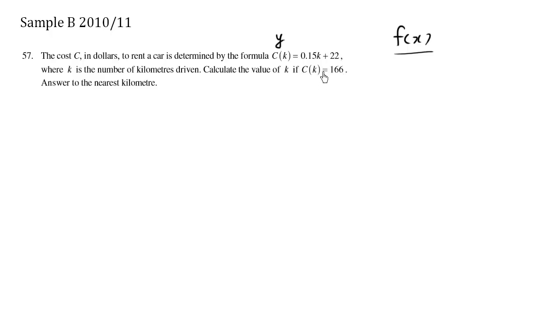c as a function of k is 166. So we're going to rewrite this. We're just given the c value. We're going to plug it in here. This is just like basic substitution. 166 equals 0.15k plus 22.